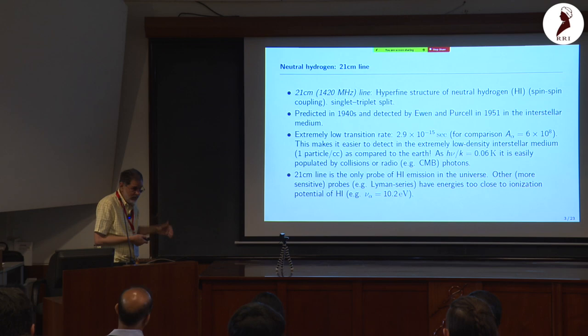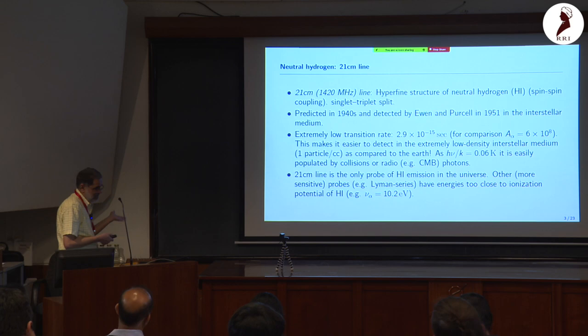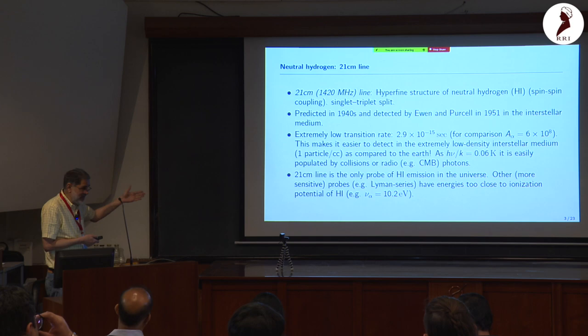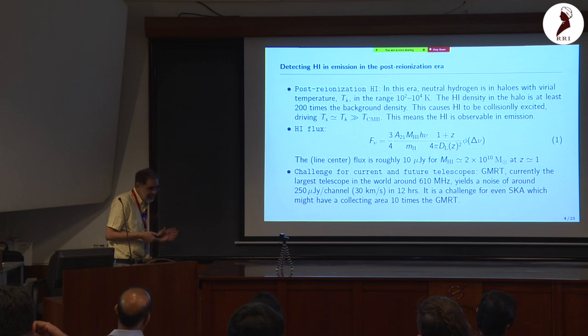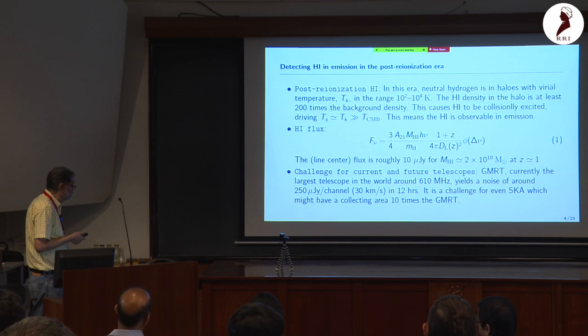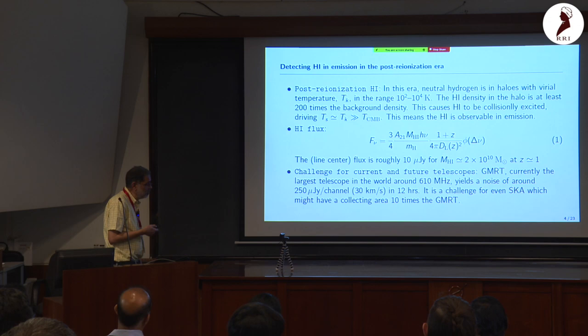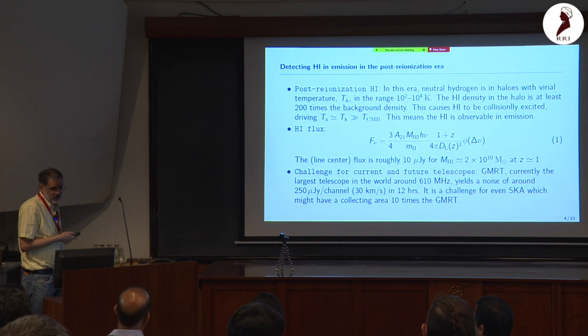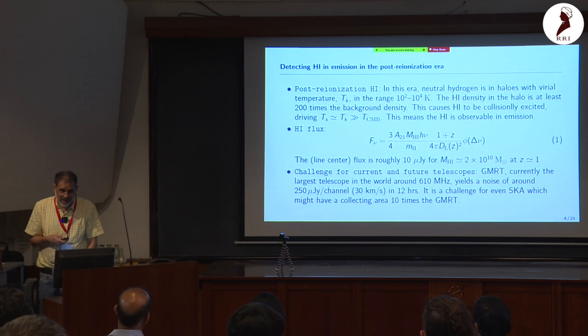Our aim is detecting HI in the post-recombination era. In this era, neutral hydrogen is in halos with virial temperatures ranging from around 10^2 to 10^4 K, or roughly 5000 K. The HI density is at least 200 times more than the background density — it has followed the halo — which causes HI to be collisionally excited. This is an important difference from the epoch of reionization.